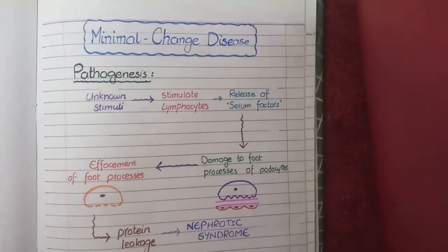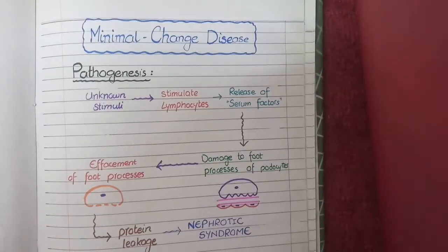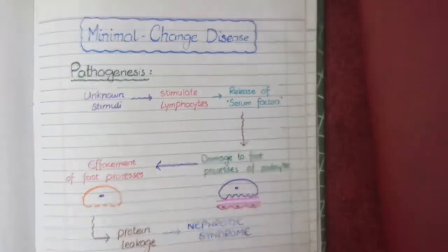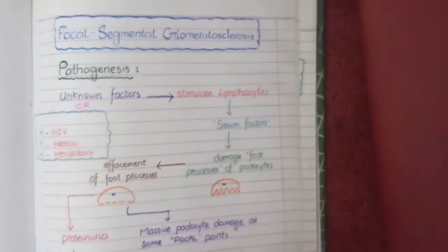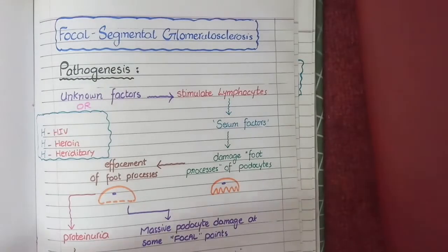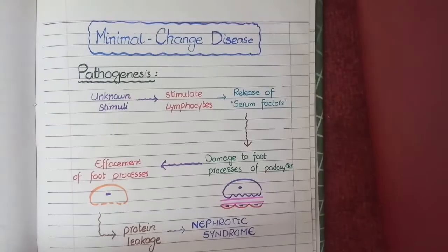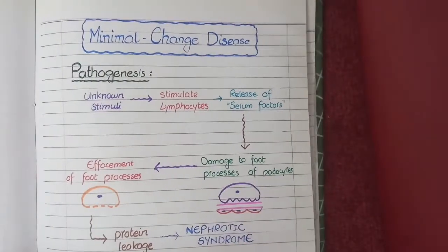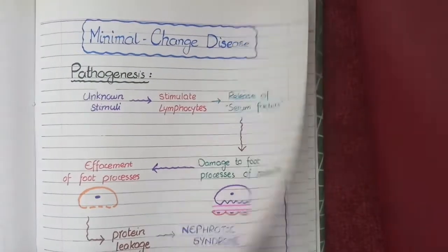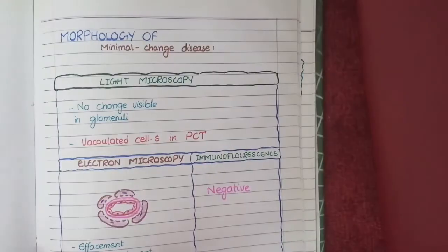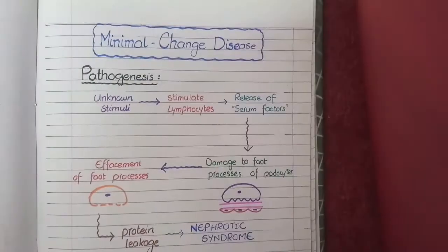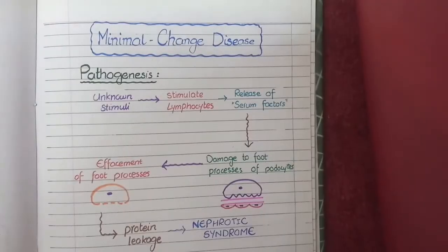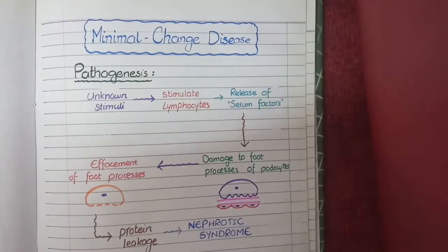In this video we will discuss two main glomerular diseases: minimal change disease and focal segmental glomerulosclerosis. We will start with minimal change disease, first studying its pathogenesis and then its morphology in detail. Before the pathogenesis, there are two small introductory points to mention.